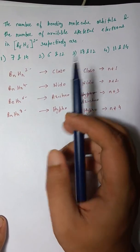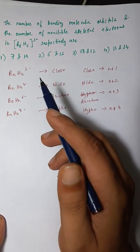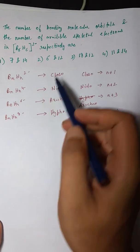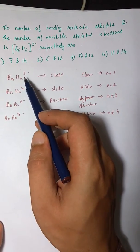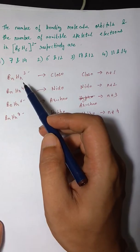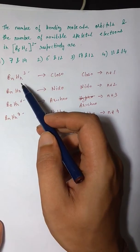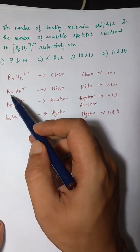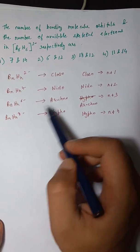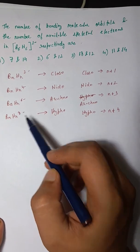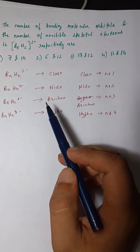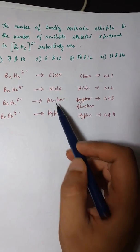For the shortcut method you need to know the basic structural formula for Closo, Nido, Arachno, and Hypo. For Closo it's BₙHₙ²⁻, for Nido it's BₙHₙ⁴⁻, for Arachno it's BₙHₙ⁶⁻, and for Hypo it's BₙHₙ⁸⁻, where N is any positive integer.